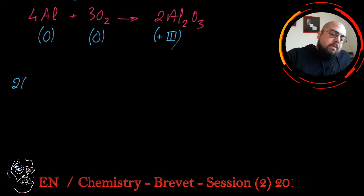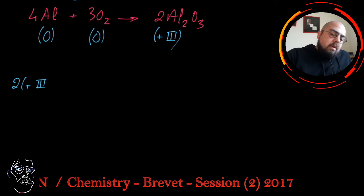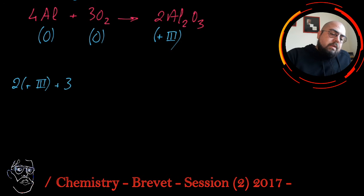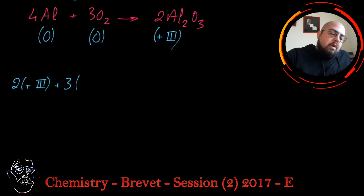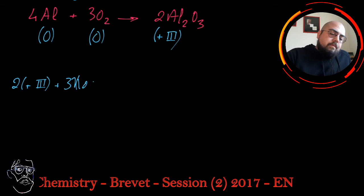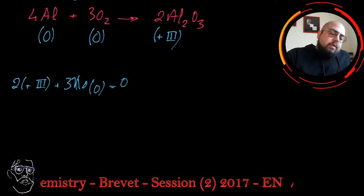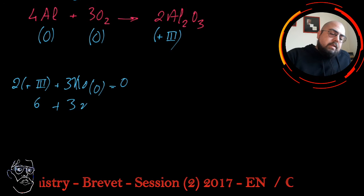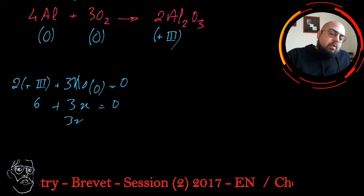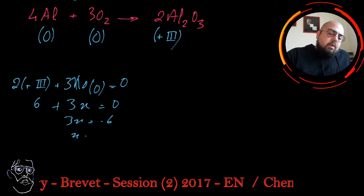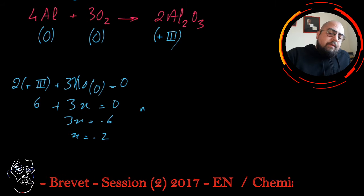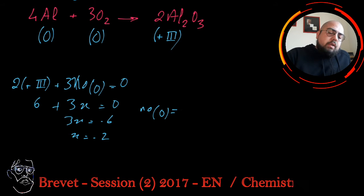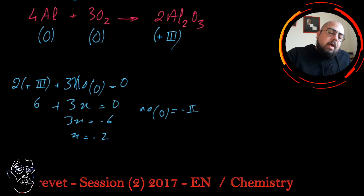We know that Al is plus 3, it was given. We have to calculate the oxygen. You can say that 2 times plus 3 plus 3 times the number of oxidation of oxygen is equal to zero. So 6 plus 3x is equal to zero. 3x is equal to minus 6. x is equal to minus 2. So number of oxidation of oxygen is minus 2 in the compound Al2O3.